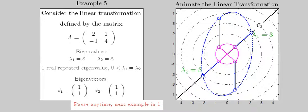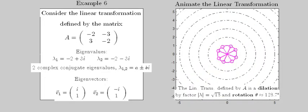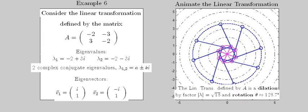The last example here has complex eigenvalues, which always occur in conjugate pairs. The image here is a rotation as well as a dilation. The angle of rotation can be found using the arctangent function appropriately, whereas the dilation is the magnitude of the complex eigenvalue.